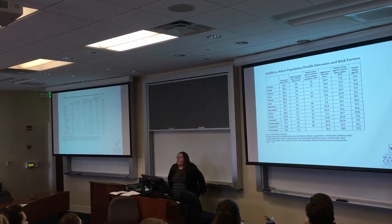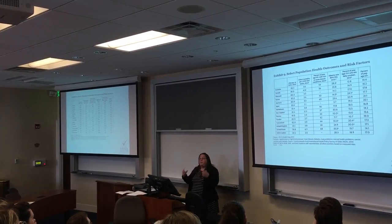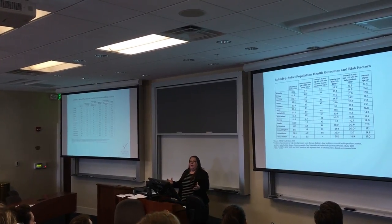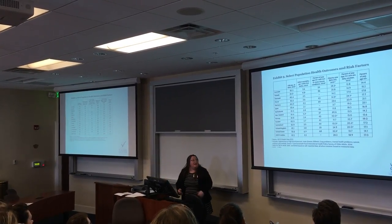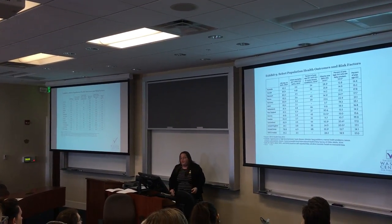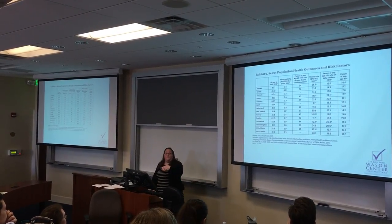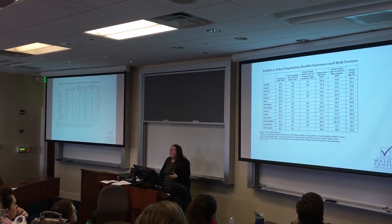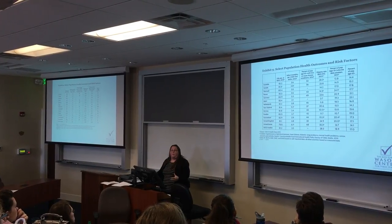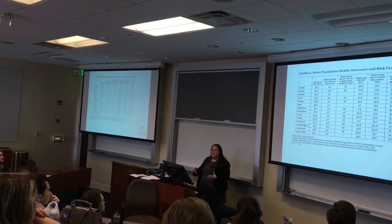Our third category is outcomes. We're spending a ton of money, so surely we'd have the best outcomes in the world — but the United States is down at the bottom. We have terrible outcomes compared to other countries. Our life expectancy is four or five years shorter than the countries at the top. Our infant mortality — the number of babies that die during birth or in those first few months — is double that of some other countries.